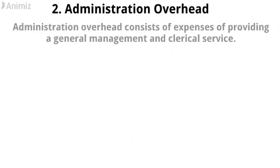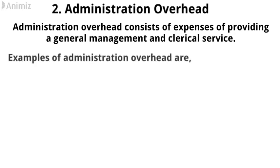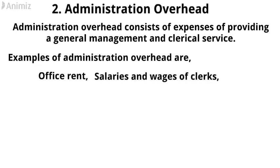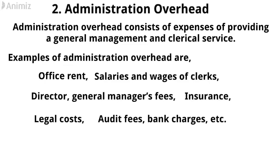2. Administration Overhead. Administration Overhead consists of expenses of providing general management and clerical service. Examples of administration overhead are: office rent, salaries and wages of clerks, director and general manager's fees, insurance, legal costs, audit fees, bank charges, etc.